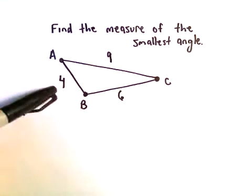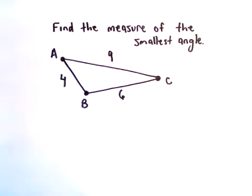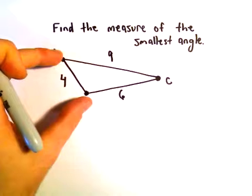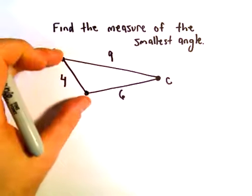So we have side lengths of 4, 6, and 9. The first observation is the smallest angle is going to be opposite the side of the triangle that has shortest length.